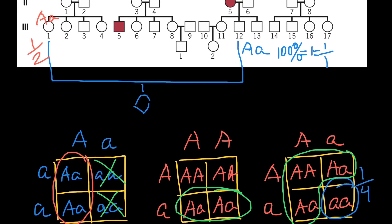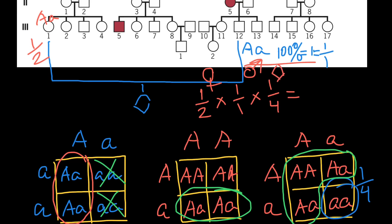Final step: the probability for the mother to be a carrier is one half. The probability for the father to be a carrier is 100%, or one over one. The probability that this family would have an affected child is one quarter. We multiply all these numbers together: one half times one times one quarter. Simple calculations show us that the probability that their child would have this genetic disorder is one eighth. This is our final answer.